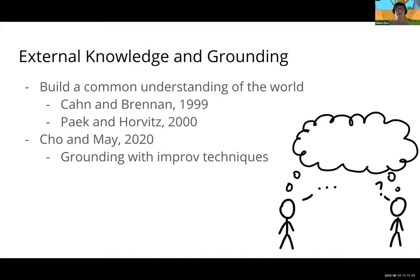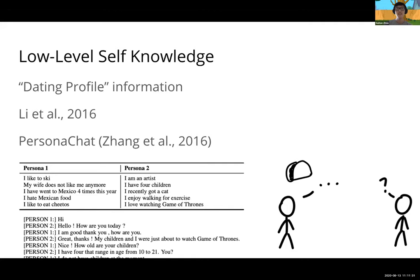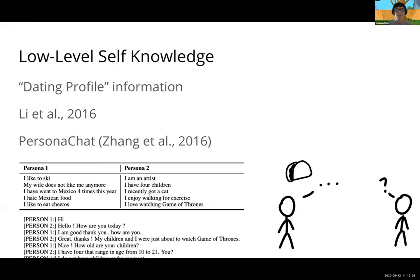There's also the idea of low-level self-knowledge — like dating profile information: what are your likes, what are your dislikes. This was proposed by a group from Stanford in 2016 and popularized by the release of the PersonaChat dataset from Facebook AI. The idea is that what you know of yourself actually impacts the conversation a lot. If I ask what you like, you should be able to tell me and not contradict yourself later. This data set has a collection of personas for each participant and they construct a conversation incorporating those facts about themselves.